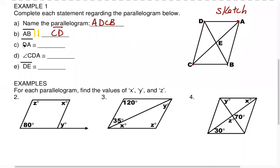Moving on to part C: segment DA. DA is the top. DA is congruent or has the same measure as what? The top has to have the same measure as the bottom — opposite sides. So we could call that segment CB or BC, same thing. The order doesn't matter.